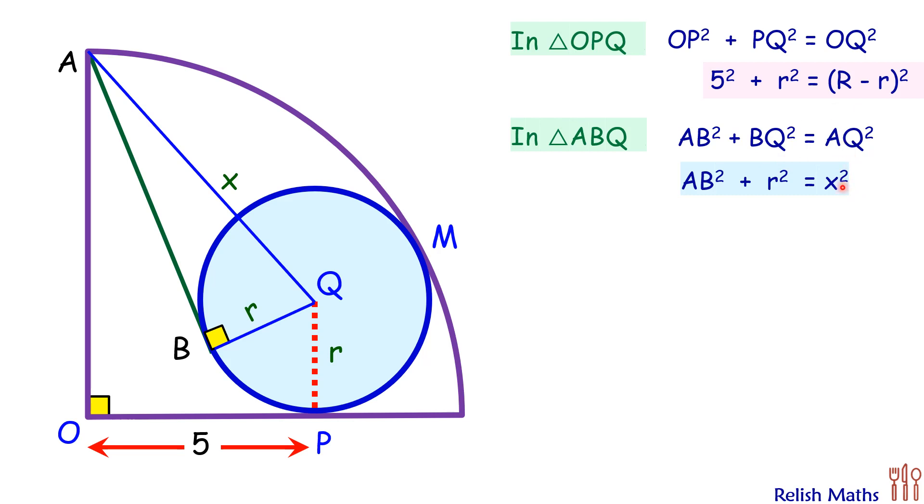For the third equation, we are dropping a perpendicular from Q on AO. Let's call this point as point N. Now QP and NO are equal. They are the distance between parallel lines, so NO is nothing but r. Now full AO is capital R, so AN will be capital R minus small r.